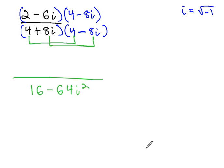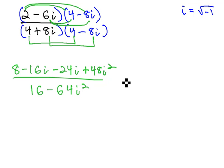In the numerator, these are not conjugates, so we do have to go through all the work of foiling. 2 times 4 is 8. 2 times negative 8i is negative 16i. Negative 6i times 4 is negative 24i, and negative 6i times negative 8i is positive 48i squared.